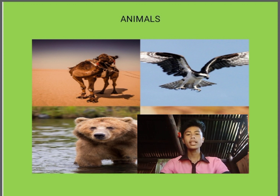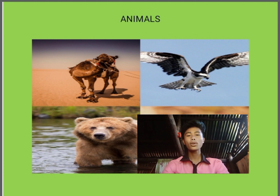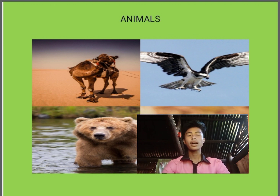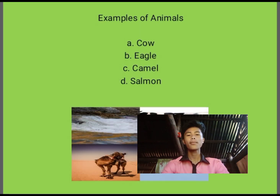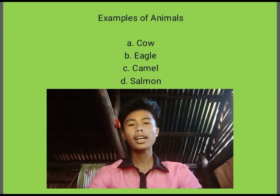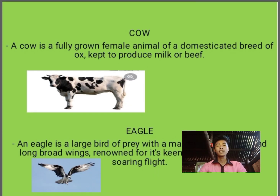We are now done discussing the four types of habitat. Let us now move on to animals. Animals have a great role in our environment — we can find many animals like dogs, cats, chickens, birds, goats, frogs, and crocodiles. We can classify different kinds of animals. I will introduce four basic kinds: the cow, the eagle, the camel, and the salmon.